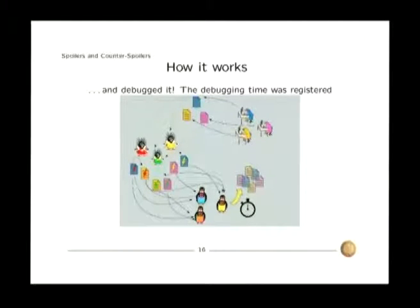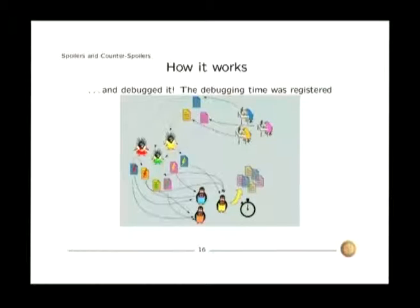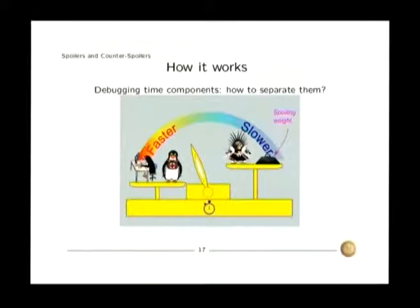At the end of the day you have a data set where you have a spoiled program, counter-spoiler, and the debugging time. Intuitively the debugging time is a function of the quality of the original program. If you write in for example obfuscated C, that's very easy to put a bug in it, and the quality of the counter-spoiler. And on the other plate of the scale you have the spoiler and the spoiling weight. The spoiling weight is a measure of the amount of code changed by the spoiler. Of course if you let the spoiler change completely the code, it's too easy to put bugs in it.